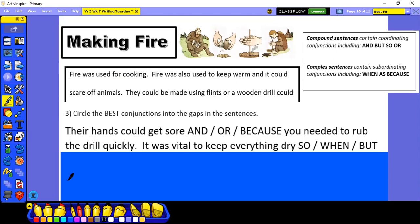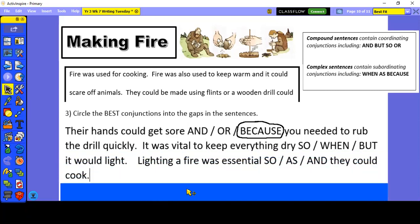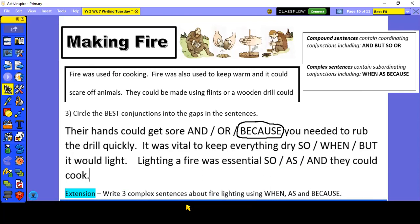I think that one there would be because so I will circle because. Now sometimes more than one of the conjunctions would make sense, so the hands could get sore and you needed to rub the drill quickly does work as a sentence. However, I did say I want the best conjunctions. Because is the best conjunction to make sense in that sentence. That's the core task. If you'd like an extension, I'd like you to go on to write three complex sentences about fire lighting. So this time you write the sentences yourself but you have to use the subordinating conjunctions when, as and because within them. If you'd like a simplified version, then the simplified version is the same as the core task but I've already done the first stage for you. I've underlined the conjunctions for you so all you then have to do is color code the simple, compound and complex sentences.